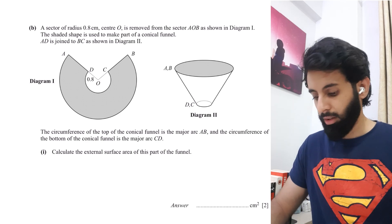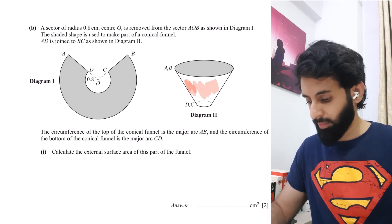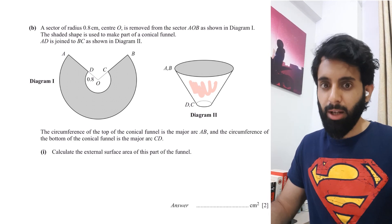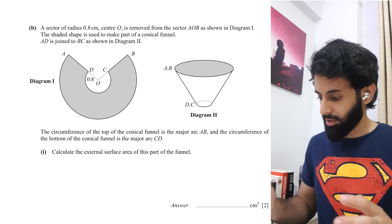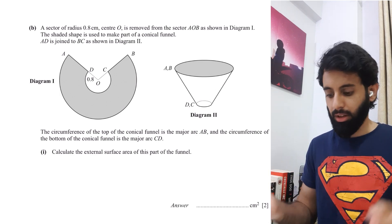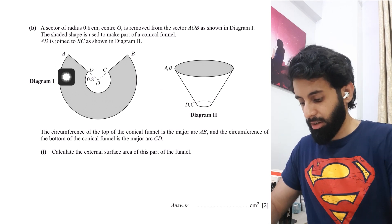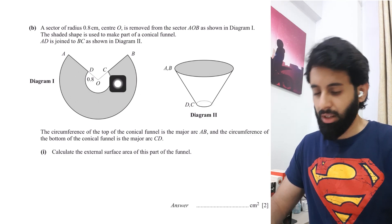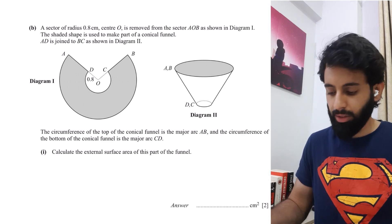The question asks to calculate the external surface area of this part of the funnel. There's no direct formula to plug values into here. What we need to observe is the transition: the shaded 2D shape has been folded into the curved 3D surface. That means the area of the curved surface equals the area of the shaded region, so I'll work out the shaded area instead.